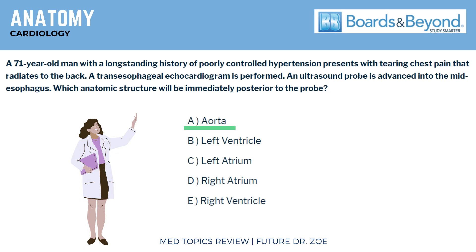The symptoms of the patient are suggestive of aortic dissection — indicated by the keywords tearing chest pain that radiates to the back. This can be confirmed by imaging the aorta with CT angiography or transesophageal echocardiography as mentioned in this case. If you forget the anatomy, you can get clues from the case itself. If this patient has aortic dissection, they're probably asking you about its anatomic correlation, so the answer most likely would be aorta.